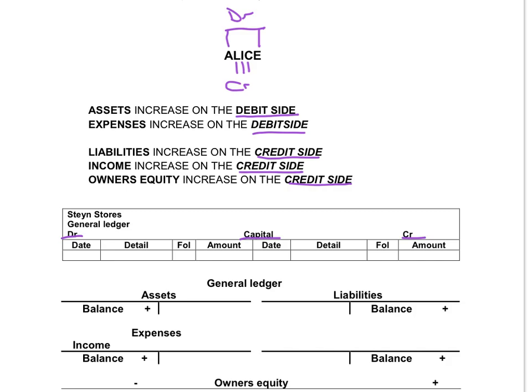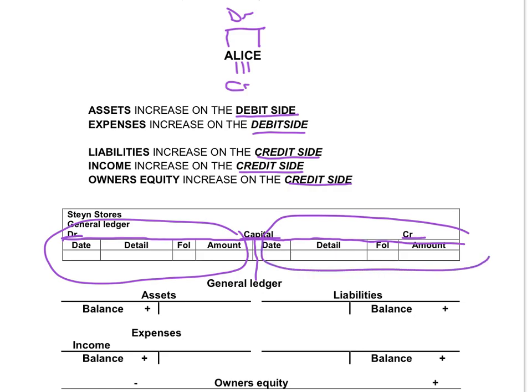If we look at this account, it means that the account is split in two — the debit side on the left-hand side and the credit side on the right-hand side. The account is divided into debit and credit, and that looks like a T. That's why we sometimes refer to general ledger accounts as T accounts.